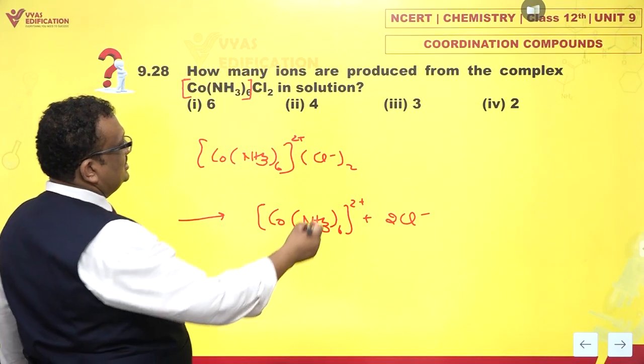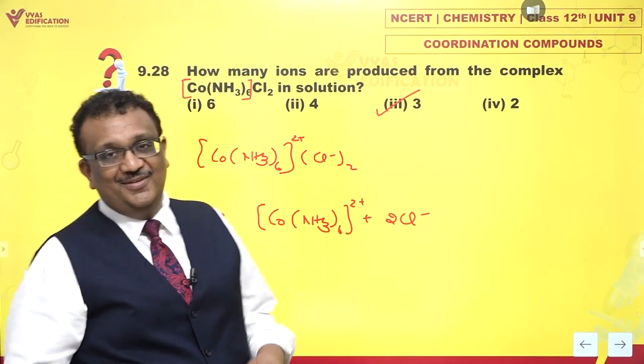How many ions are produced? The answer is 3. 3 ions are produced. That's it.